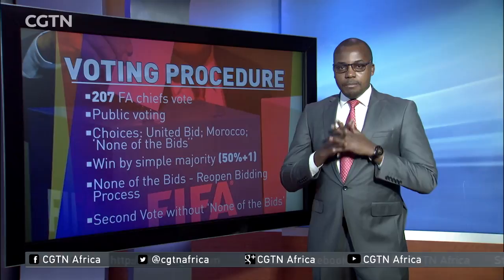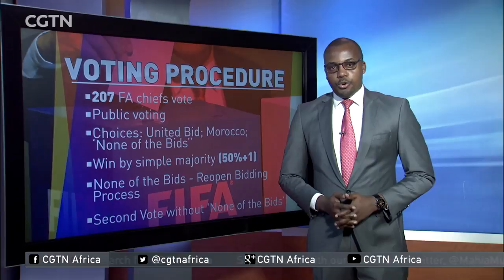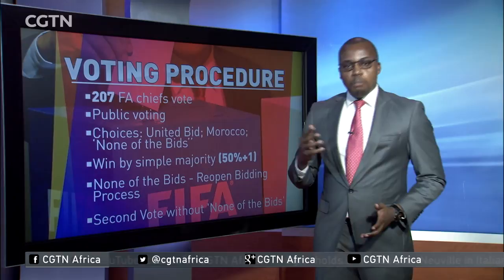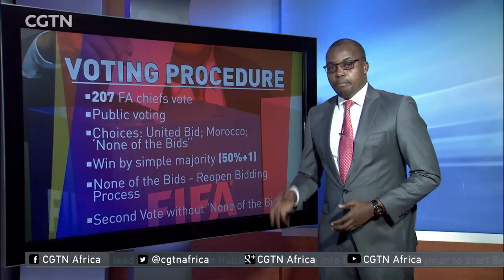This is very critical: if the choice 'none of the bids' gets a simple majority, then the two bids will be deemed rejected and a new bidding process opened. If neither of the two bids gets a simple majority but they get more votes than 'none of the bids', then there will be a second round of voting without 'none of the bids' as an option. The bid with the most votes in the second round will have won the bidding process.